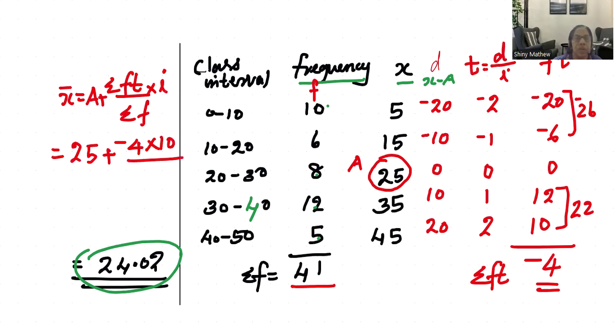This gives us 25 minus 40 divided by 41.